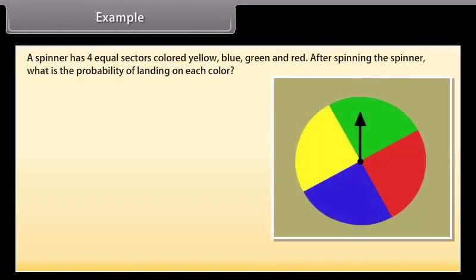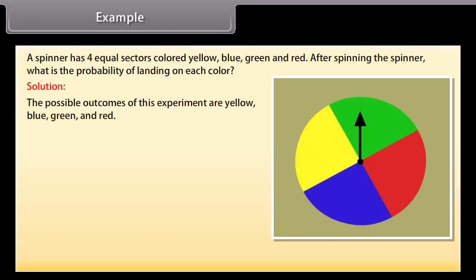A spinner has four equal sectors colored yellow, blue, green, and red. After spinning the spinner, what is the probability of landing on each color? Solution: The possible outcomes of this experiment are yellow, blue, green, and red. Now let's find the probabilities.